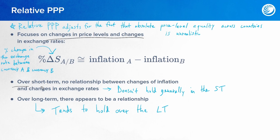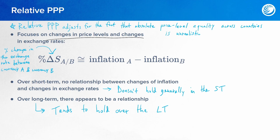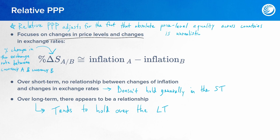If your currency is inflating by more than another country's, it should come to be worth less over time relative to that other currency. Looking at the empirical evidence, over the short term no clear relationship between changes in inflation and changes in exchange rates is evident in the data. So relative PPP generally doesn't hold in the short term. However, over the long term there appears to be a relationship, and relative PPP tends to hold over the long term.